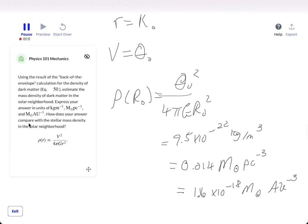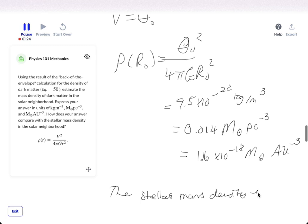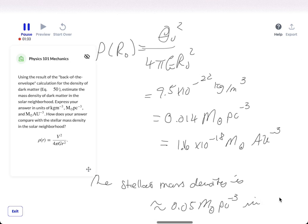Now, how does your answer compare with the stellar mass density in the solar neighborhood? Well, the stellar mass density is approximately 0.05 m sun, pc negative 3 in the solar neighborhood.